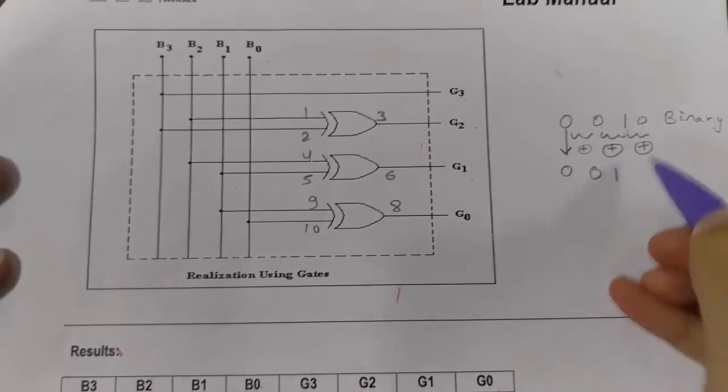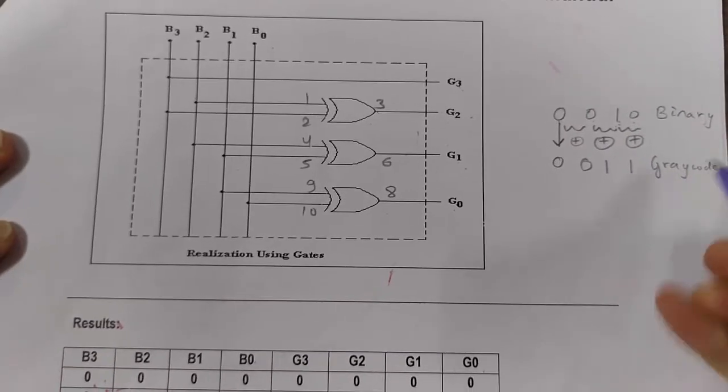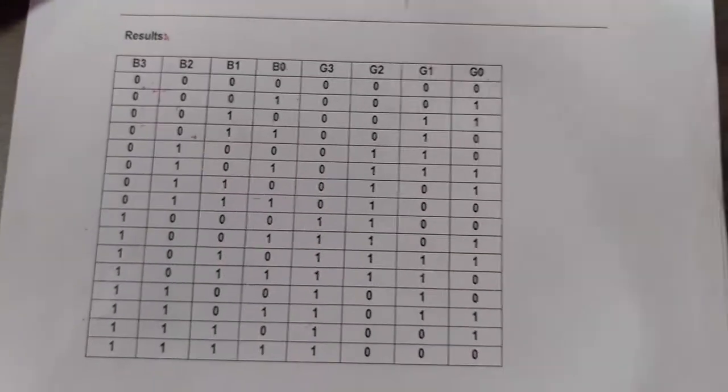01 XORed is 1, 10 XORed is 1. So this is the grey code we obtained. Hence we can write the whole binary to grey code in a table and verify it.